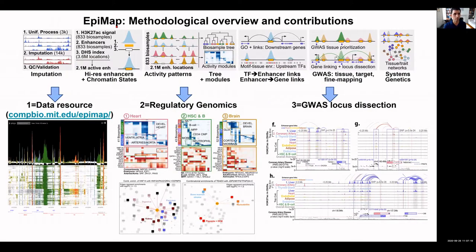For EpiMap, the work I'm presenting today, Carlos systematically integrated ENCODE, Roadmap Epigenomics, and GGR to build a resource for large-scale regulatory genomics. Specifically, he uniformly processed 3,000 different chromatin and RNA tracks, systematically imputed an additional 14,000 tracks, carried out extensive QC and validation, and performed high-resolution annotation of enhancer regions based on enhancer chromatin states, H3K27 acetylation signal, and DNase hypersensitivity sites.